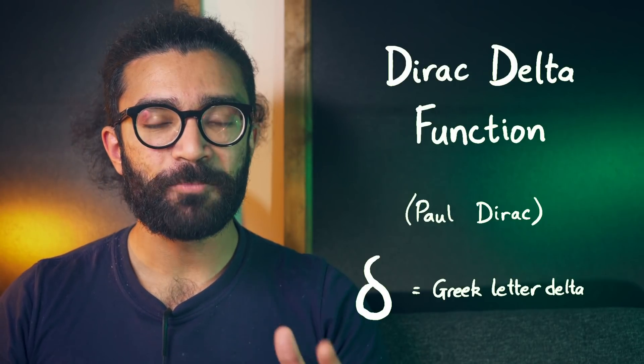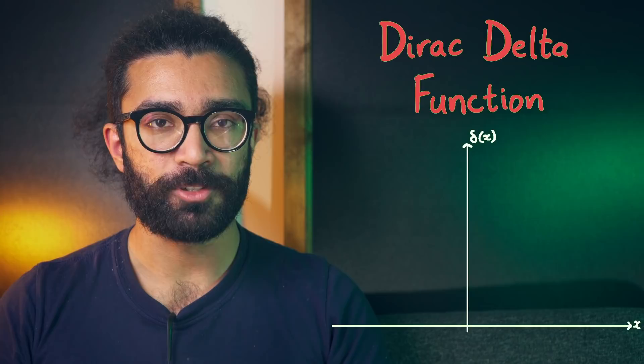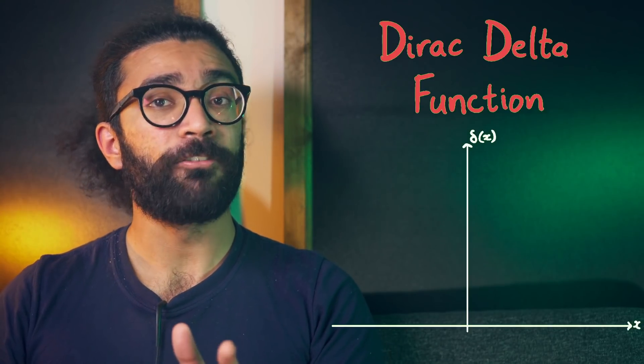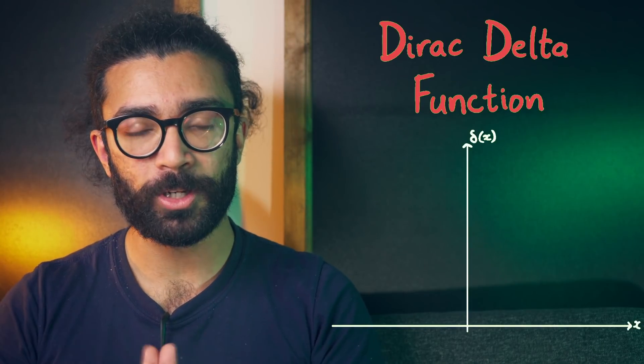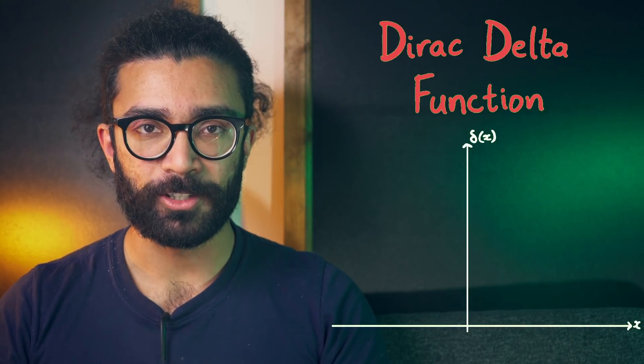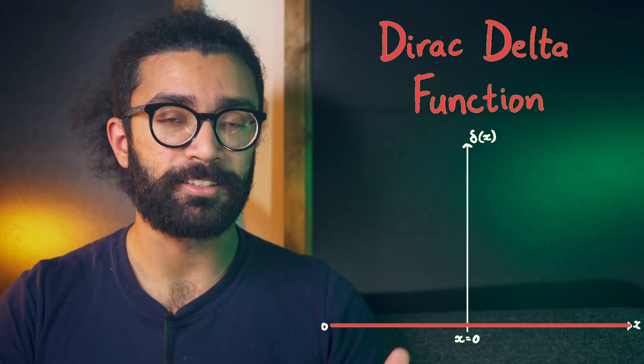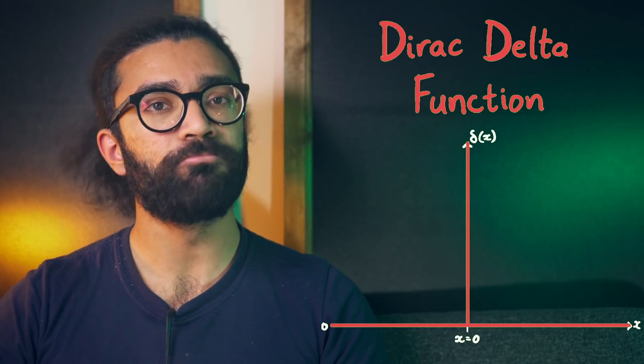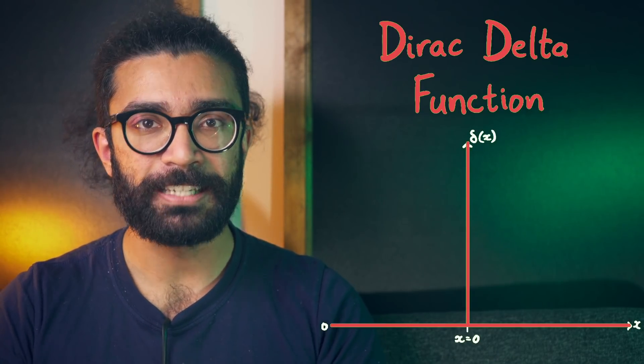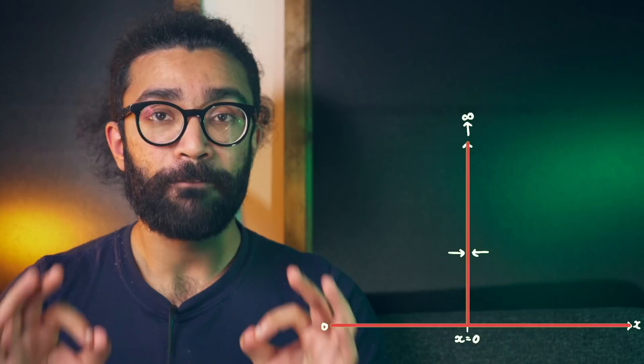First things first, what exactly is a Dirac delta function? We can plot it on a graph to give a very basic description. For almost every single value of x on the horizontal axis, our input value or independent variable, the value of the delta function is zero. But for one specific point, let's say for now at x equals zero, the value of the function is very large, it's infinite or undefined. In other words, the delta function is a spike that is infinitesimally thin and infinitely big, while everywhere else, the value of the function is zero.